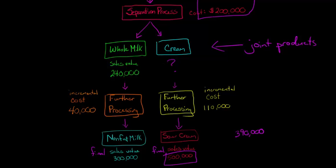So that's the final sales value. So final sales value minus the processing cost, the incremental processing cost, and that is going to be our net realizable value. So it's $390,000 for the sour cream.